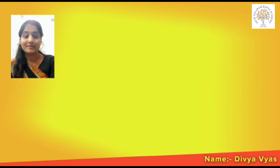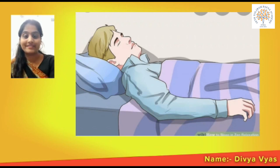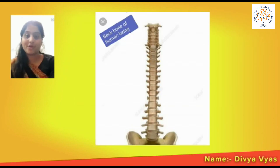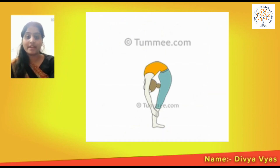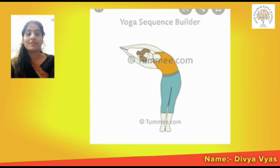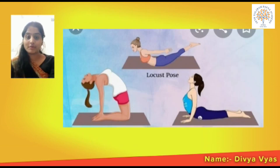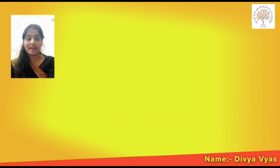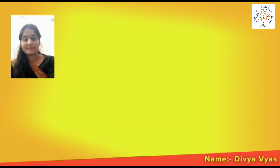Human beings are the only animals that can sleep on their back because of their backbone. Human beings have another advantage of their backbone — they can bend forward, backward, and sideways very easily, but other animals cannot. From the advantages of the backbone, a human being can walk on two limbs very properly and walk in an upright position, which other animals cannot do.